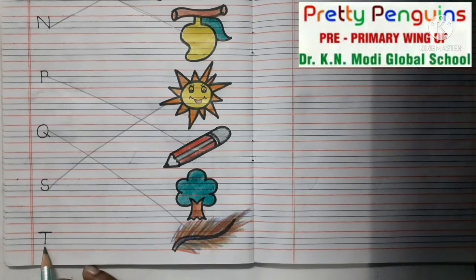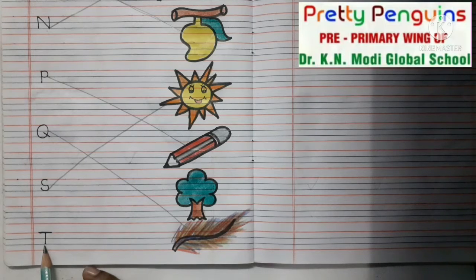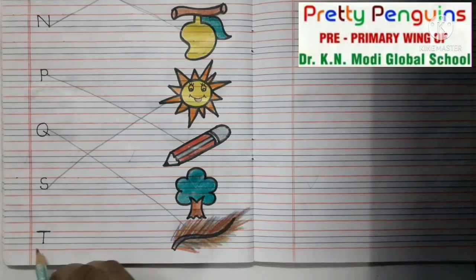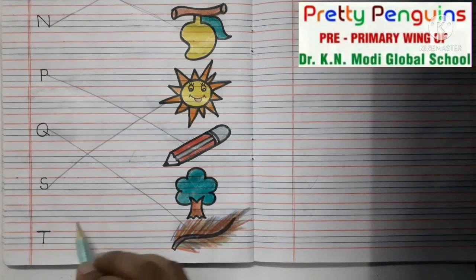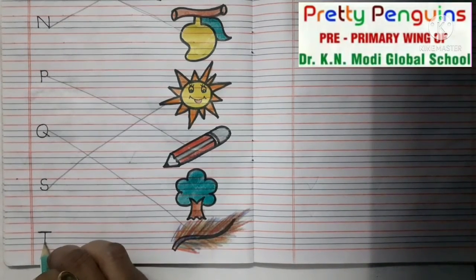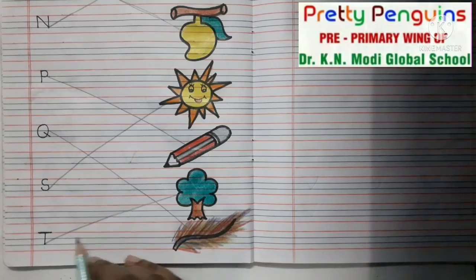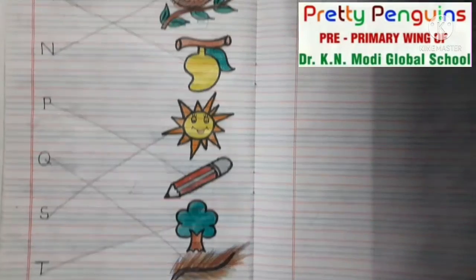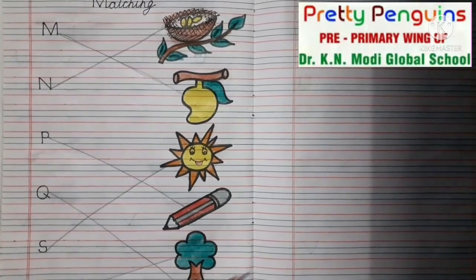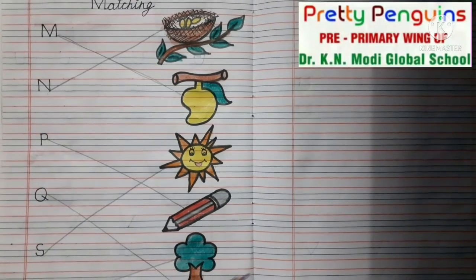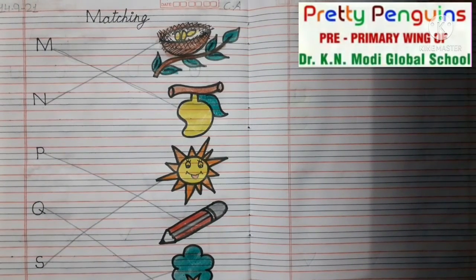Now come to the next letter. This is letter T. Now tell me, T is for what? Kya hota T se? Yes, T is for tree. So we will match letter T with tree. Letter T ko tree se match kareenge. Okay, so kids, do this work in your English notebook. I will be back after some time. Bye-bye kids, take care.